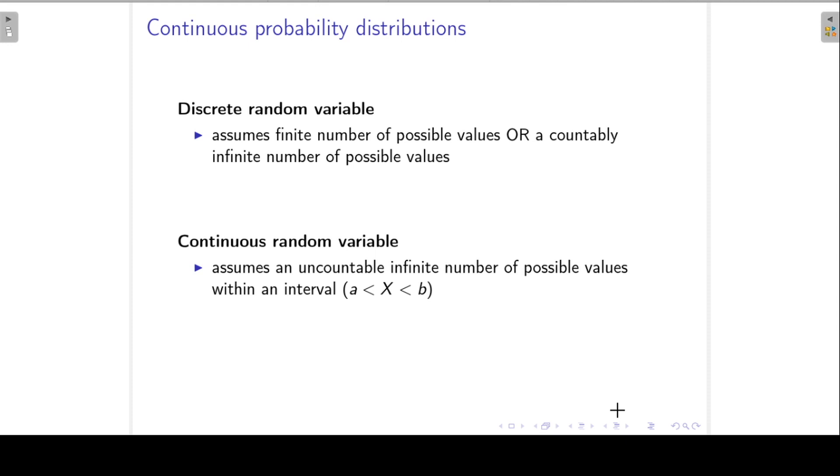First of all, for a discrete random variable, it assumes a finite number of possible values, or a countably infinite number of possible values. A continuous random variable assumes a value within an interval, so it assumes an uncountable infinite number of possible values.